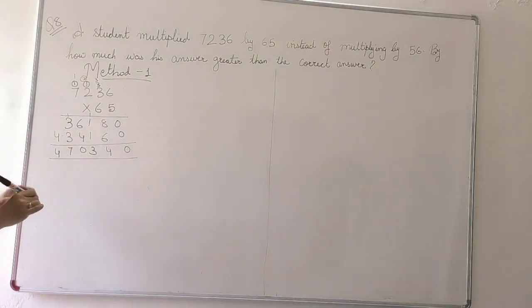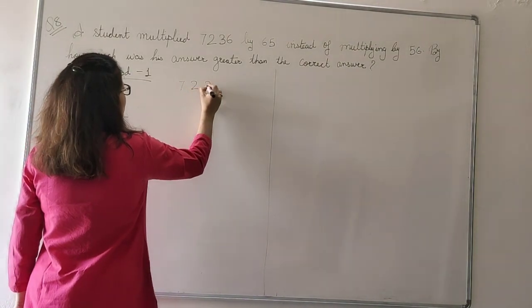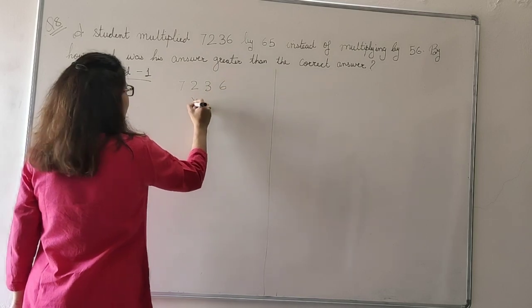So the answer is 4, 47, sorry 4, 70, 340. And then 7, 2, 3, 6 multiplied by 56.